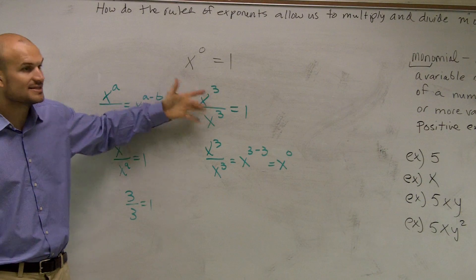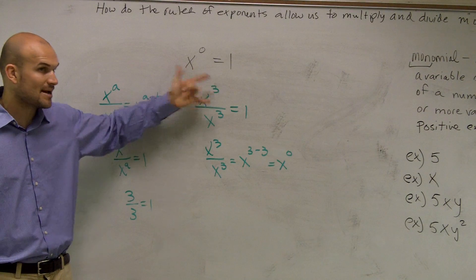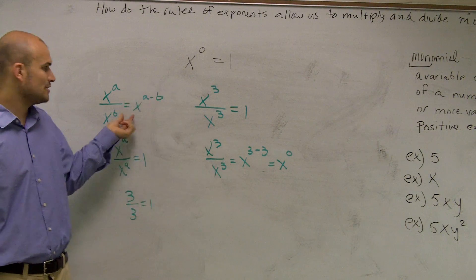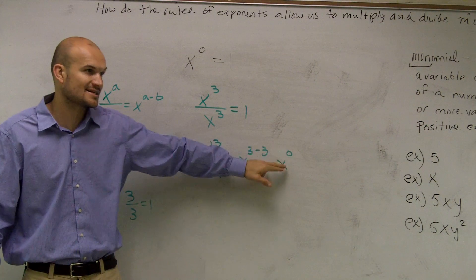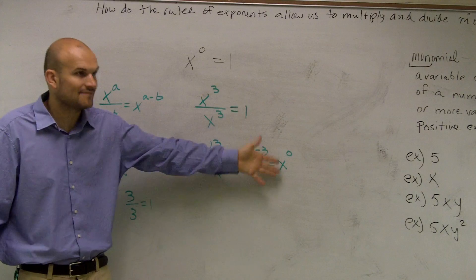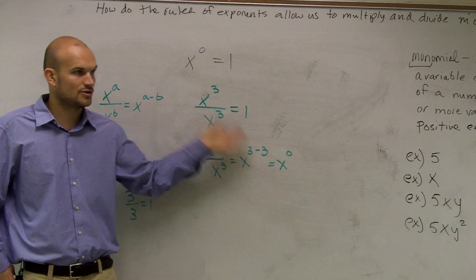Any number divided by itself is going to equal 1. You know that. But what I'm saying is, since they're the same number with the same exponents, you could also, by using the rules of exponents, by following this rule, you're also going to get x to the 0. Therefore, these have to be exactly the same. So they're equal to each other.